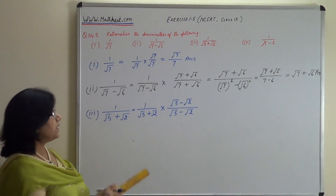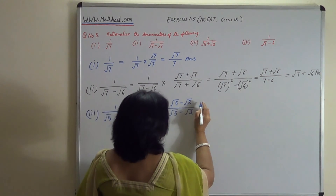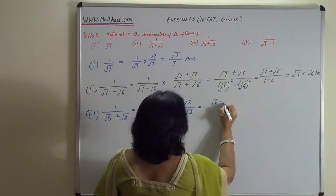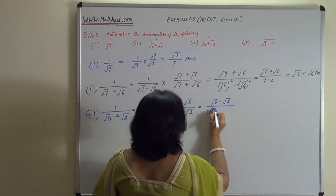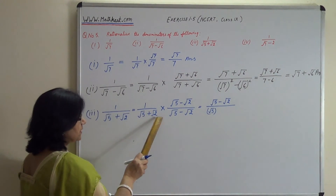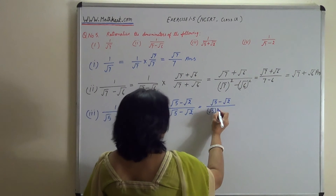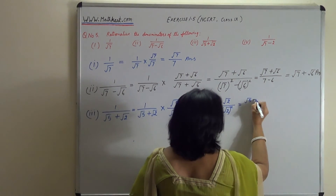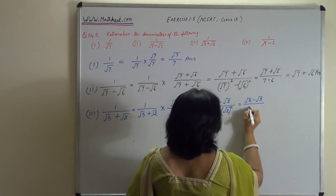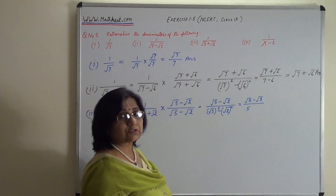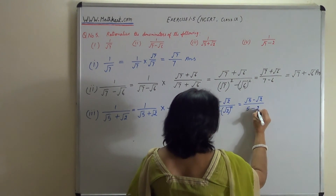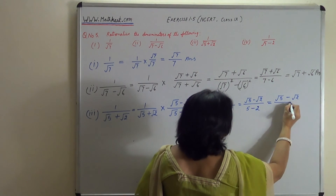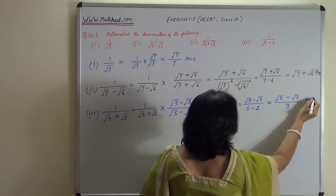यहाँ plus था तो हमने minus से multiply किया — जो भी sign हो उसके opposite sign से multiply करें। So numerator equals root 5 minus root 2, और denominator में (a plus b)(a minus b) = a squared minus b squared. तो root 5 squared minus root 2 squared = 5 minus 2 = 3. Answer: root 5 minus root 2 upon 3.